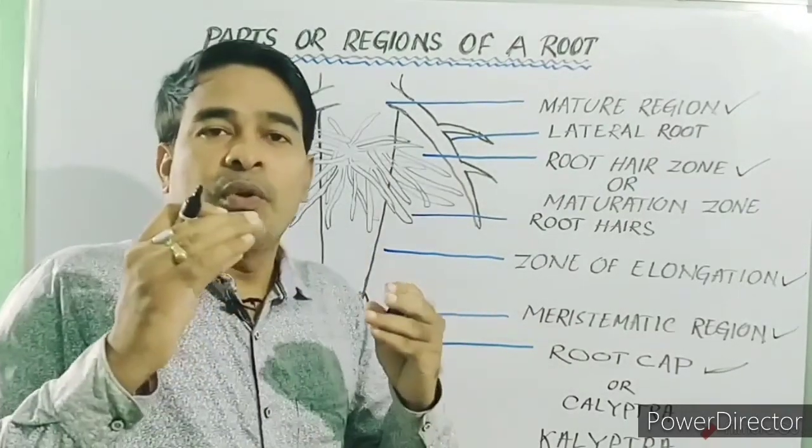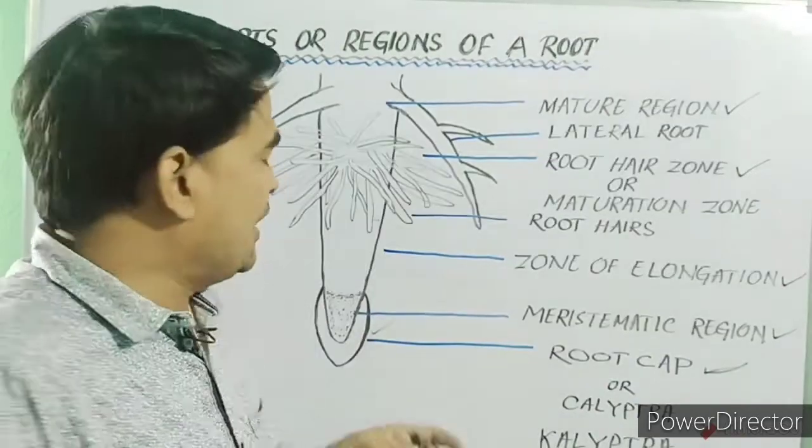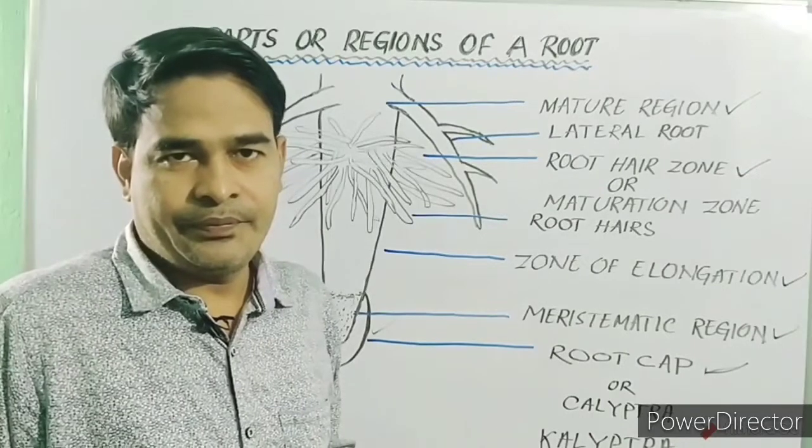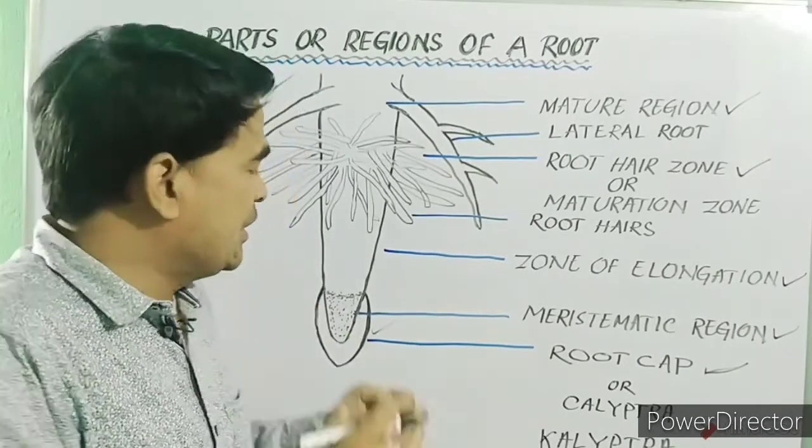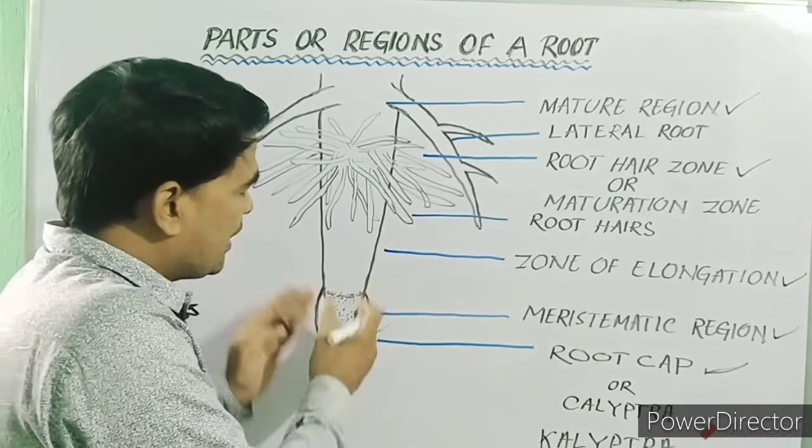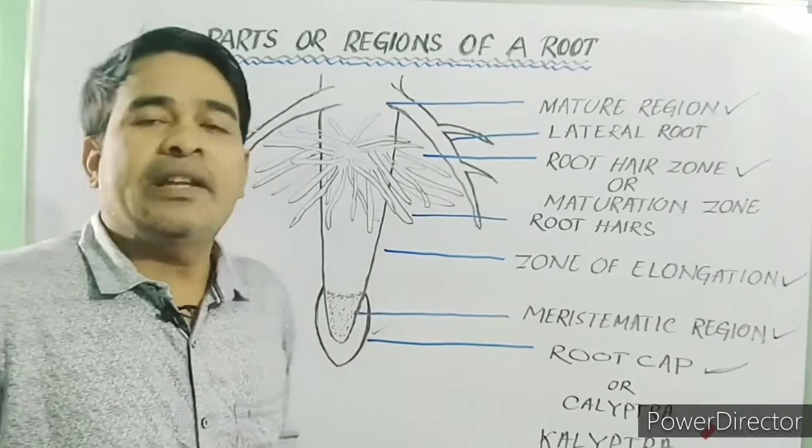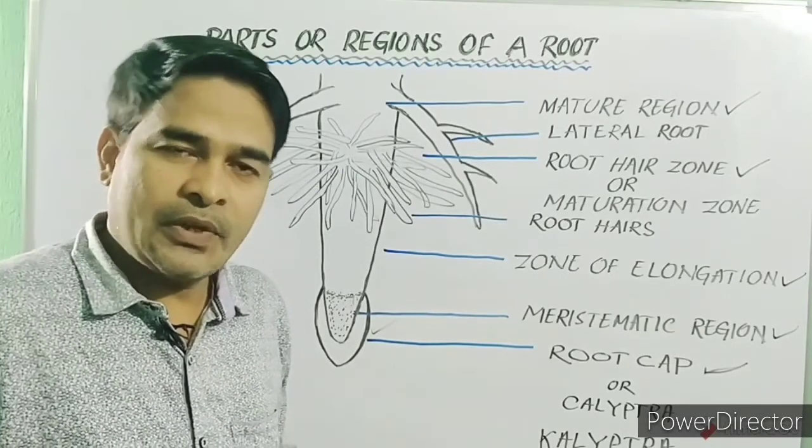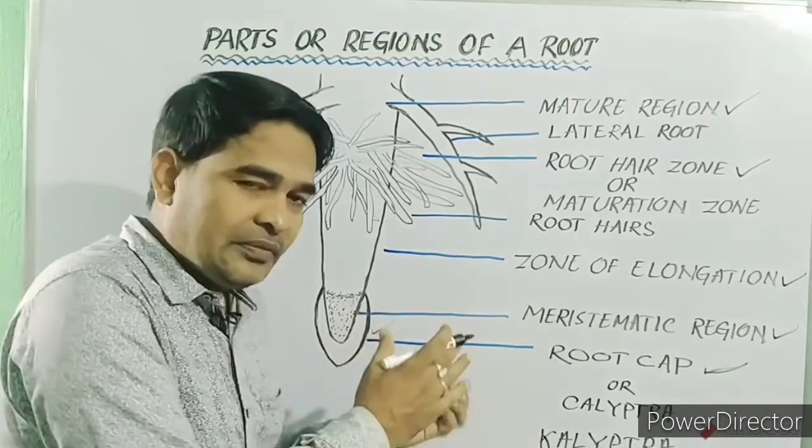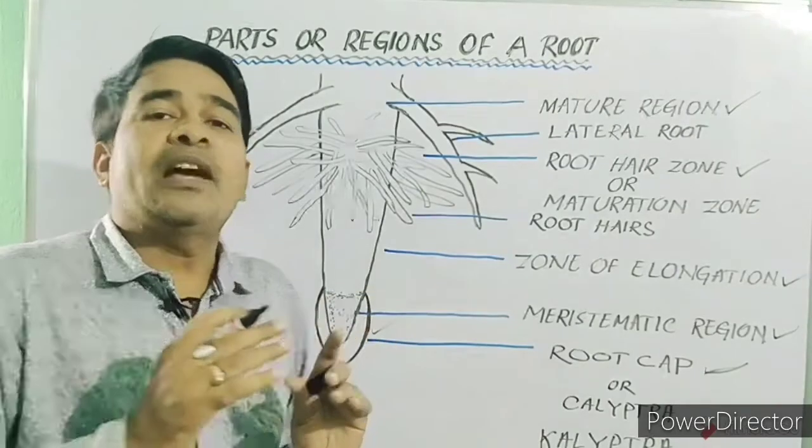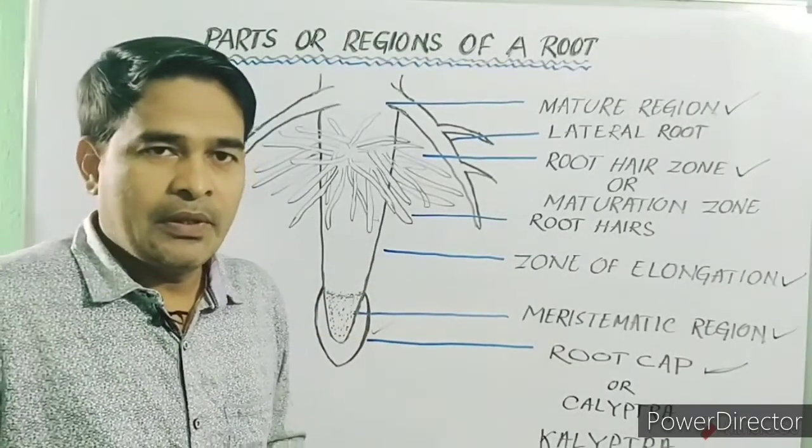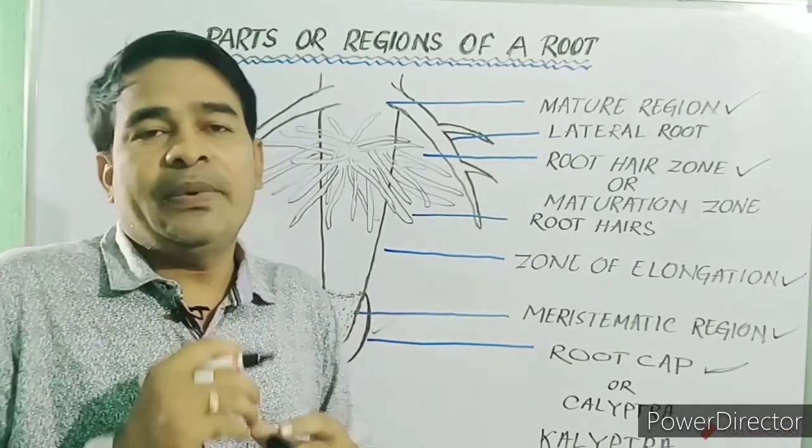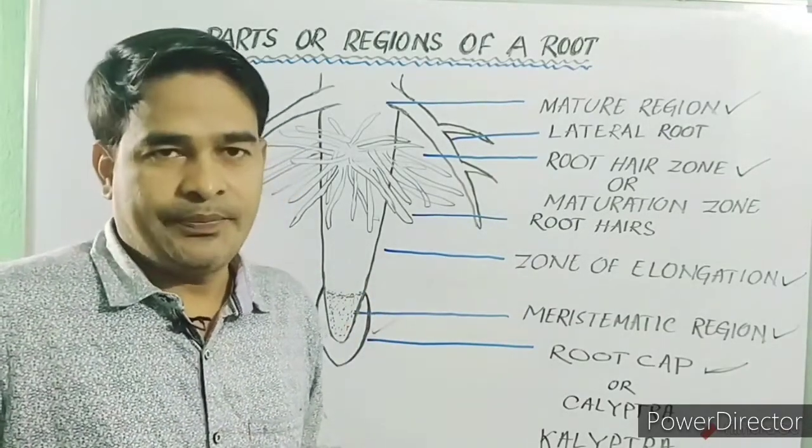And as the root grows through the soil, the outer cells of this cap peel out. However, new cells are added to this cap from the meristematic region. So, this root cap is repairable. That means an injured root cap or broken root cap can be replaced.